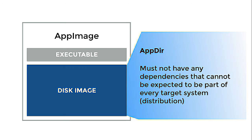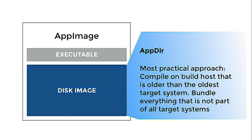When making the AppDir, you should always keep in mind that the AppDir must not have any dependencies that cannot be expected to be part of every target system or distribution that you're targeting. The most practical approach is to compile your application on a build host that is older than the oldest target system, and then bundle everything that is not part of all your target systems inside the application image.